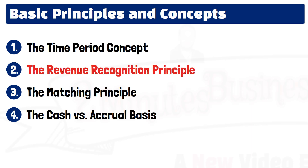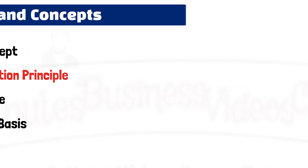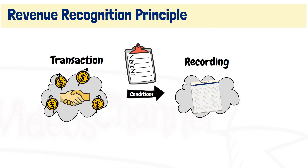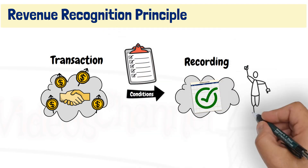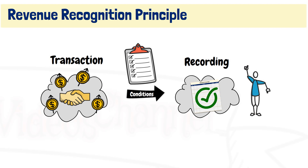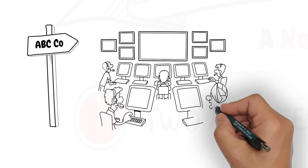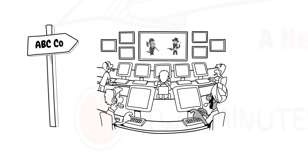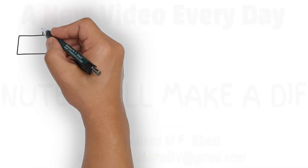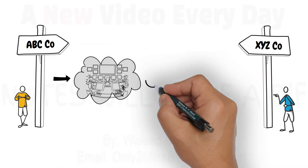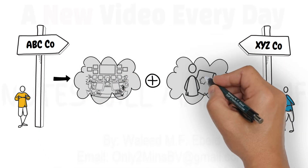The Revenue Recognition Principle. Few conditions should be satisfied to ensure that revenue is recognized accurately in the accounting records. Let us demonstrate by an example. ABC Company sells and installs security systems for homes and businesses, in addition to providing maintenance services for these systems. ABC Company agreed with XYZ Company to install a security system at XYZ premises and provide the required maintenance.